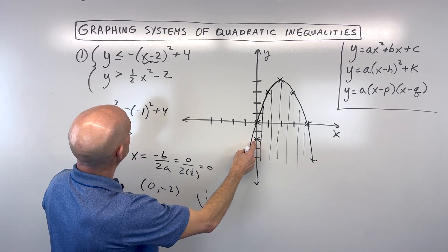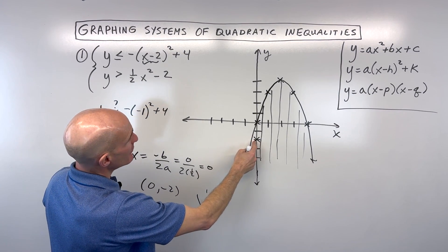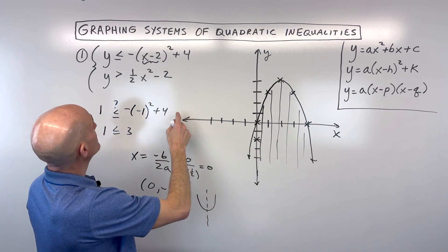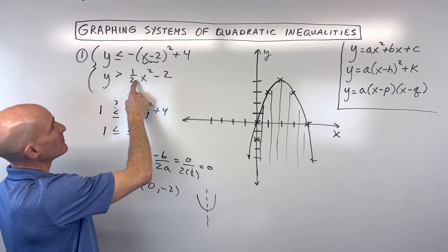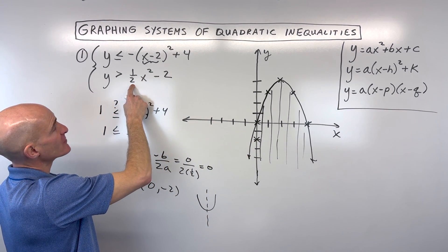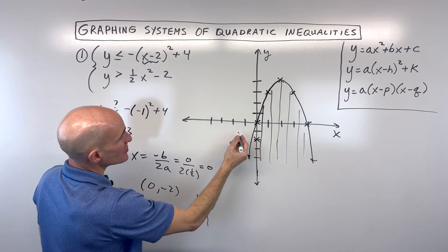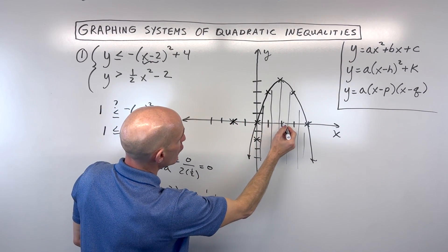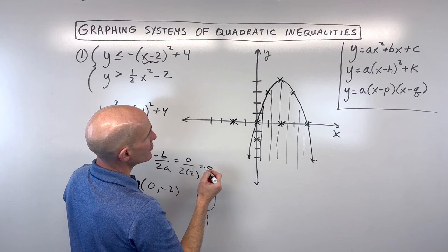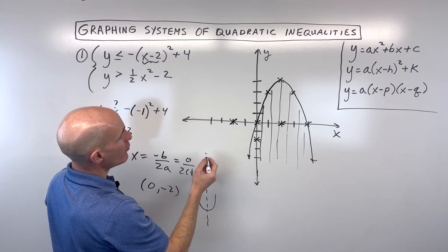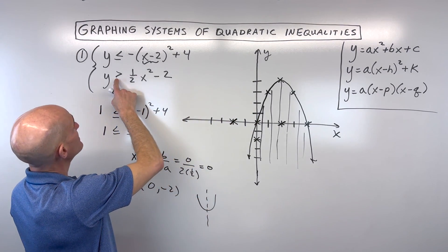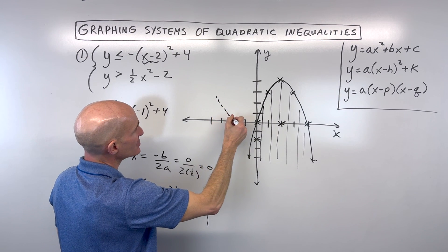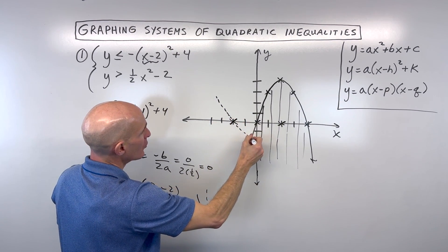Parabolas are symmetric about that line of symmetry that goes right through the vertex. So if I pick some other points — for example, if I pick negative two: negative two squared is four, times a half is two, minus two is zero. So I'd be at zero there. Reflecting that over gives another point. But let's notice that this is greater than but not equal to, so this is going to be a dashed or dotted line.